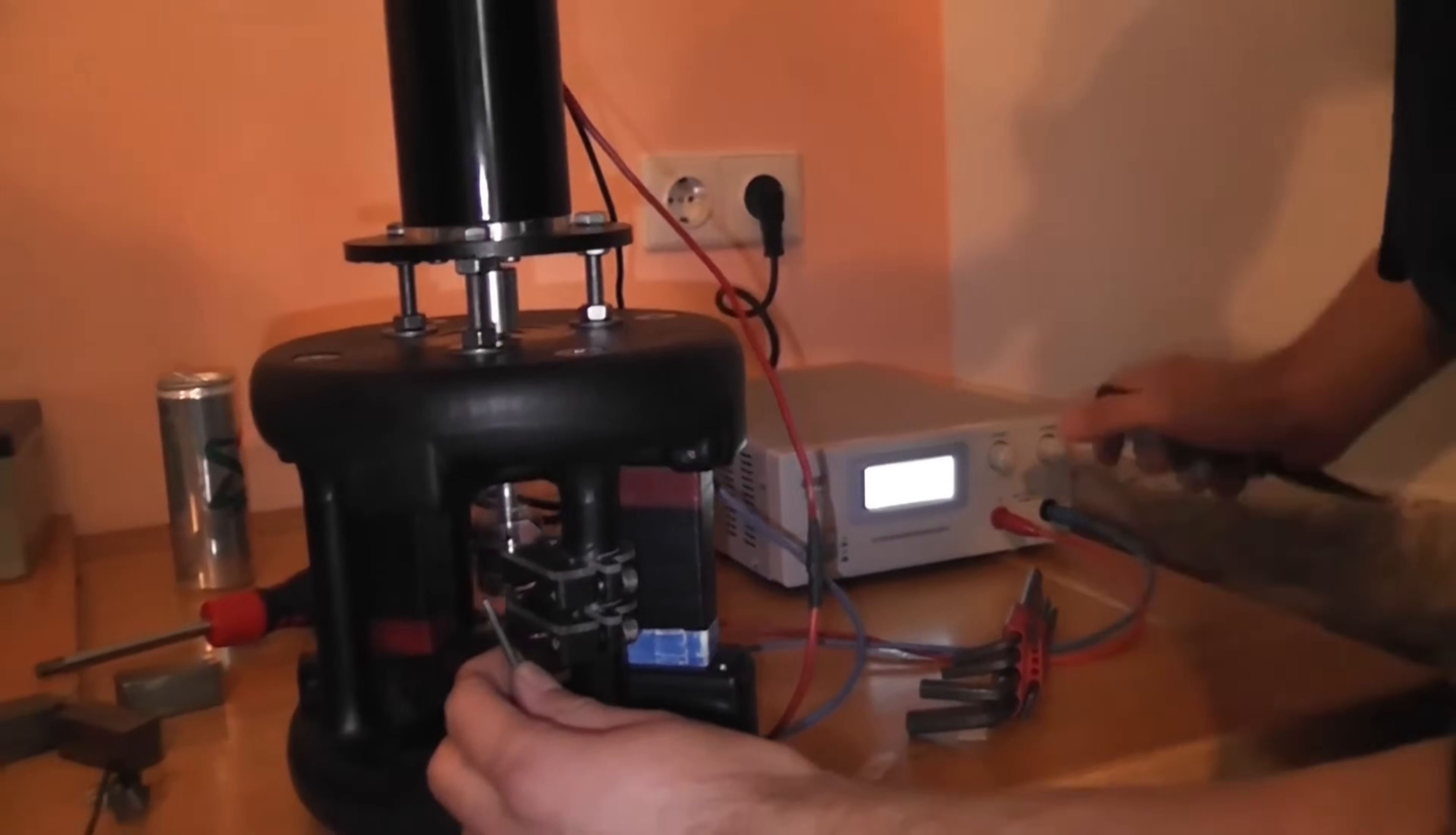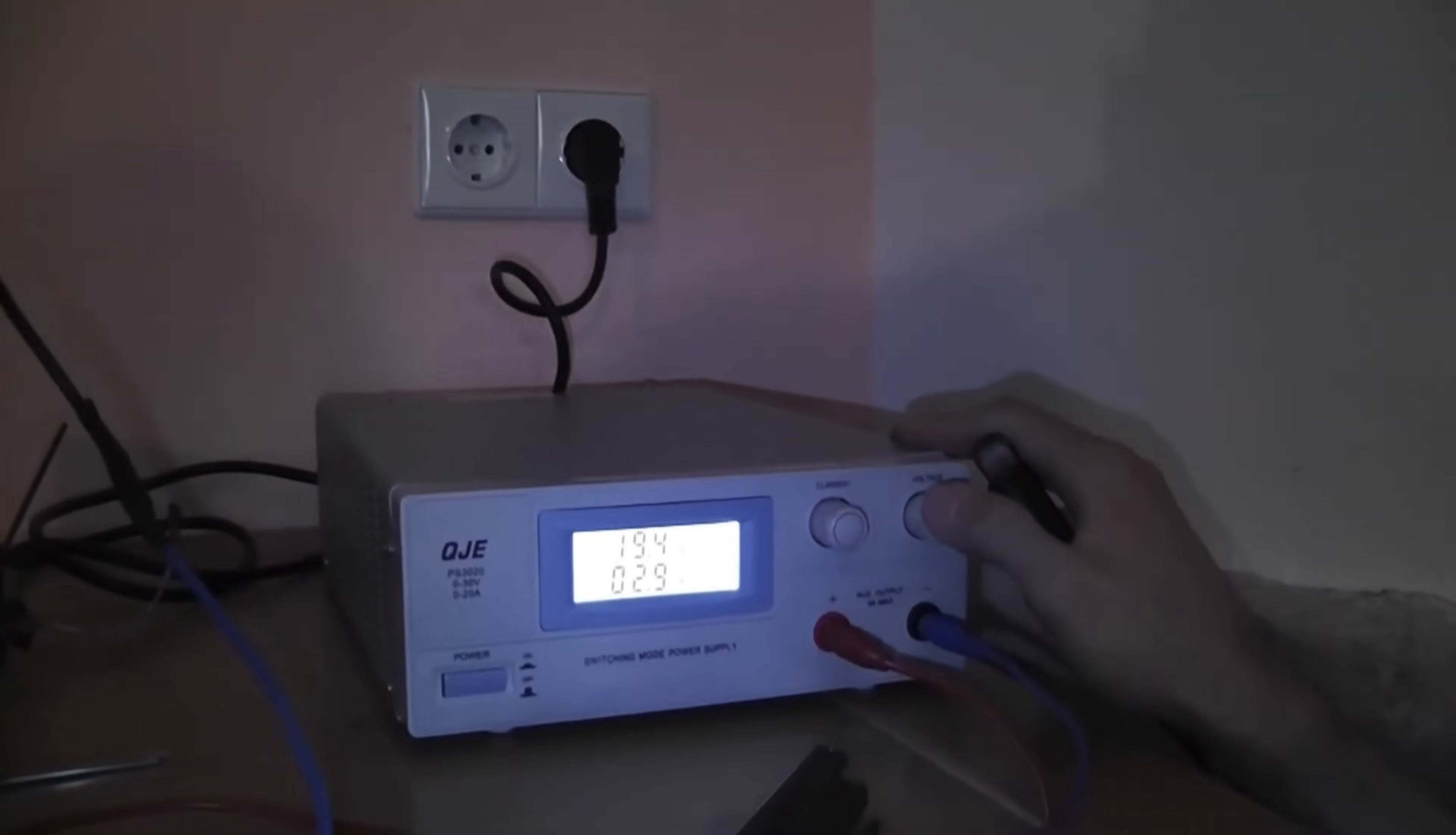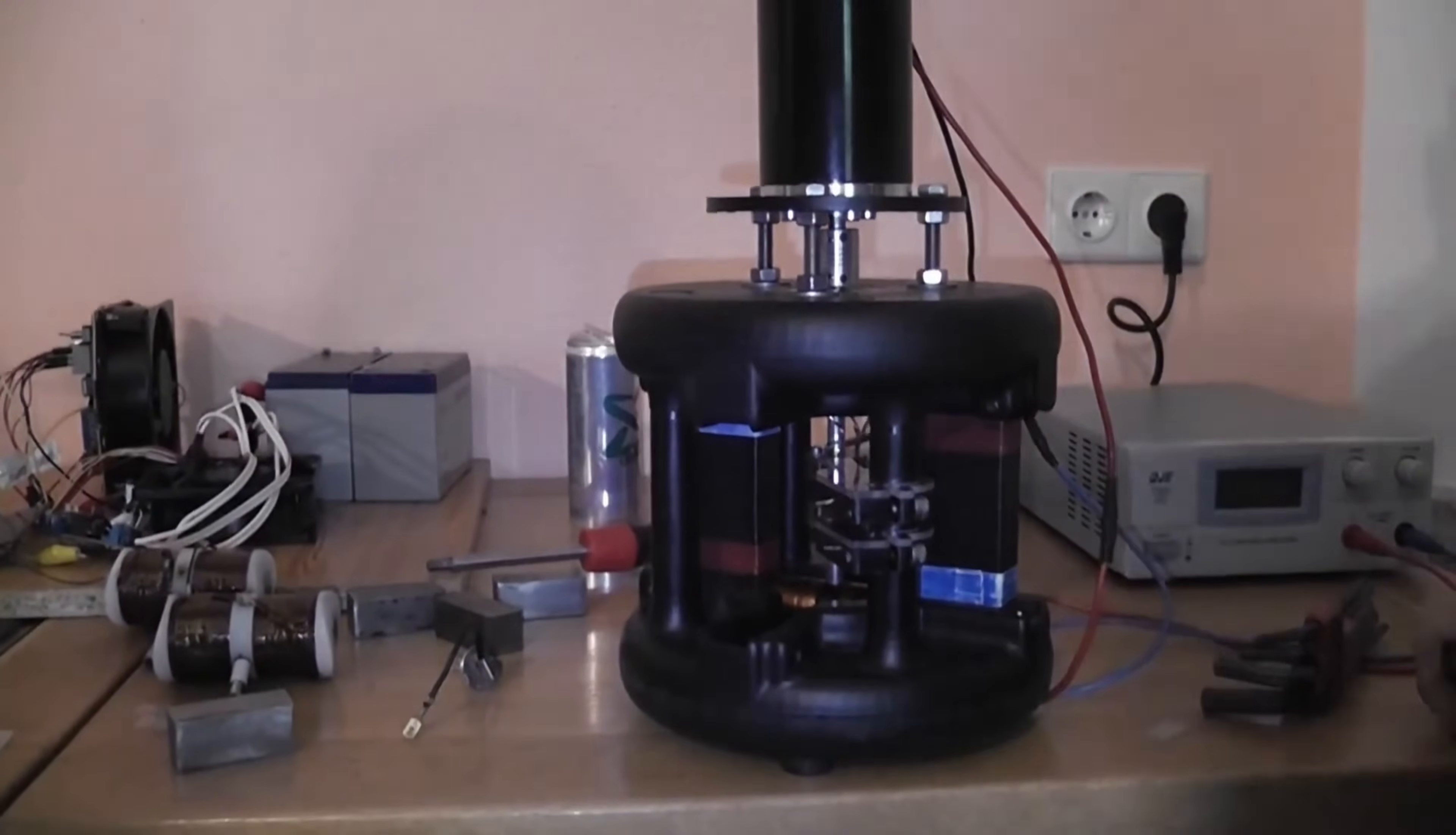One of the most remarkable aspects of Cromry's invention is its cost effectiveness. Compared to traditional energy sources, the magnetic free energy generator requires minimal maintenance and produces electricity at a fraction of the cost. This could revolutionize the way we think about energy, making it accessible and affordable for individuals, businesses and communities alike.